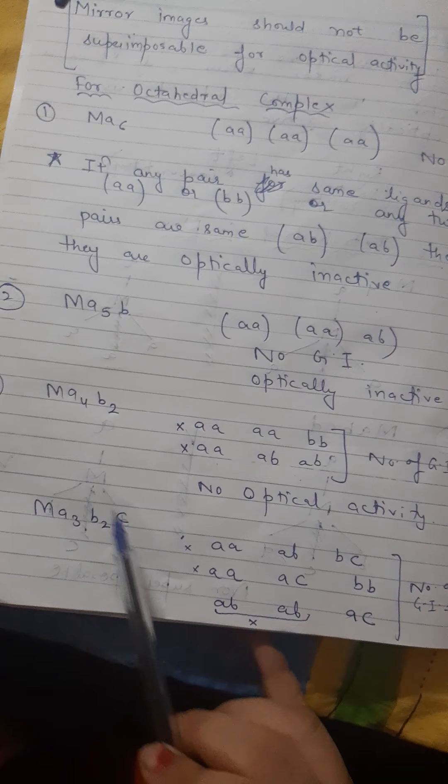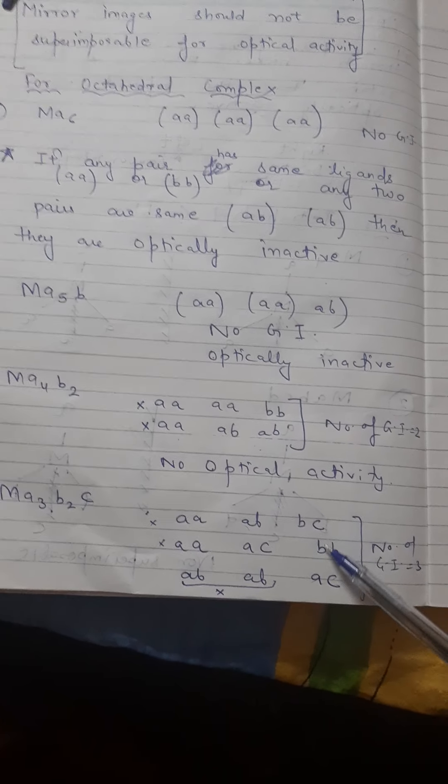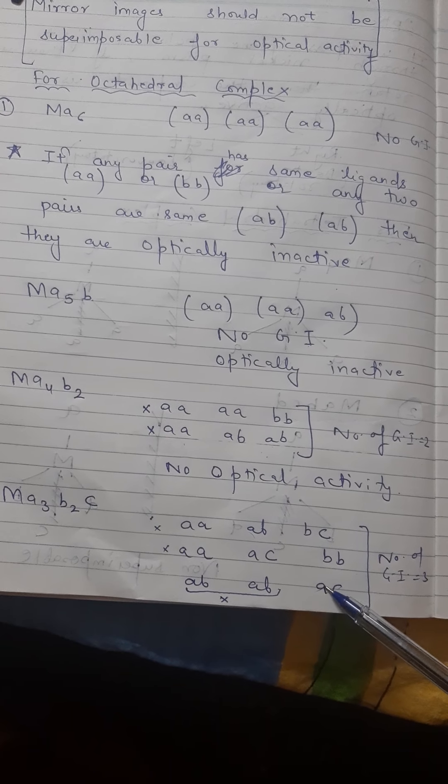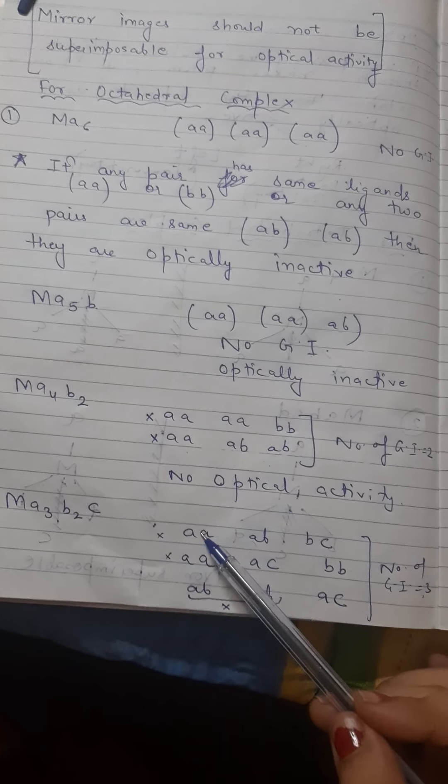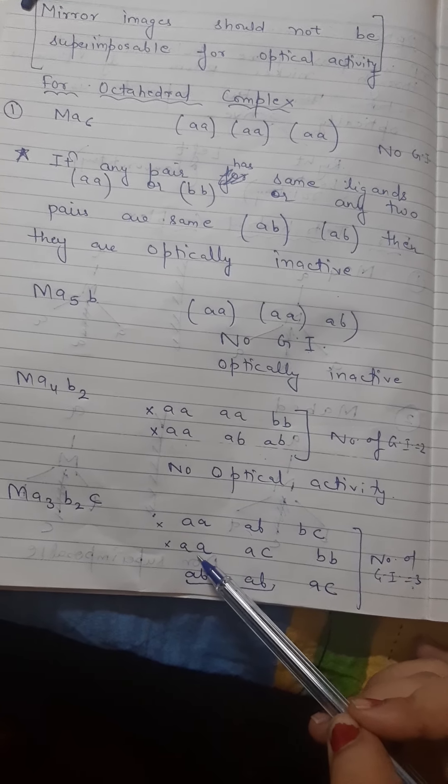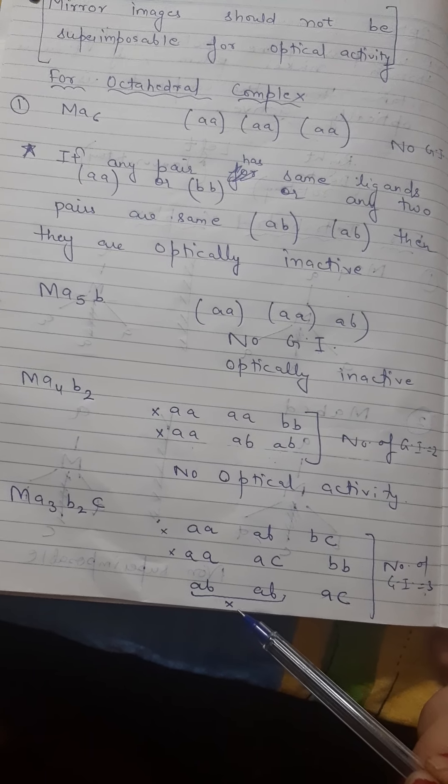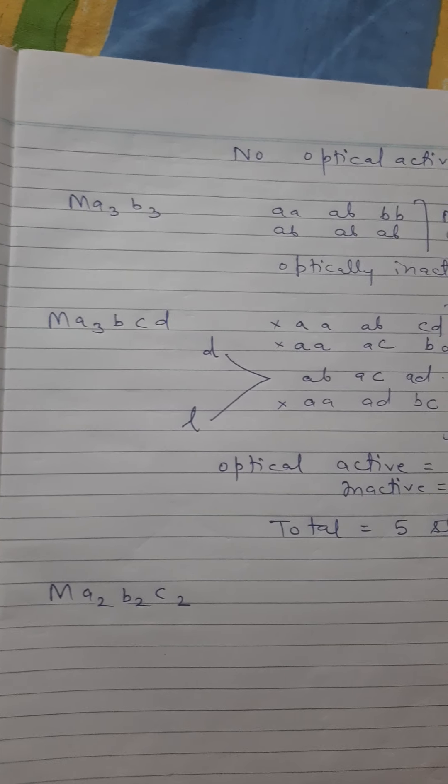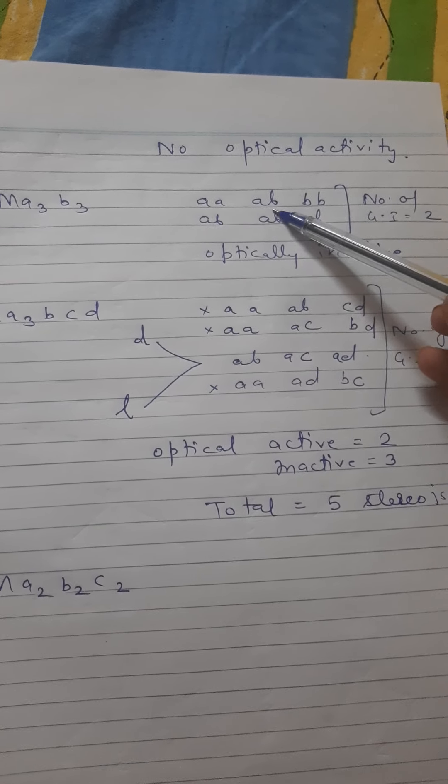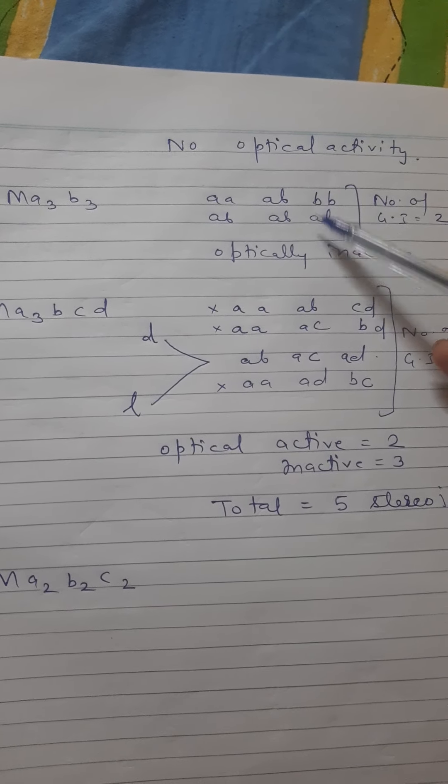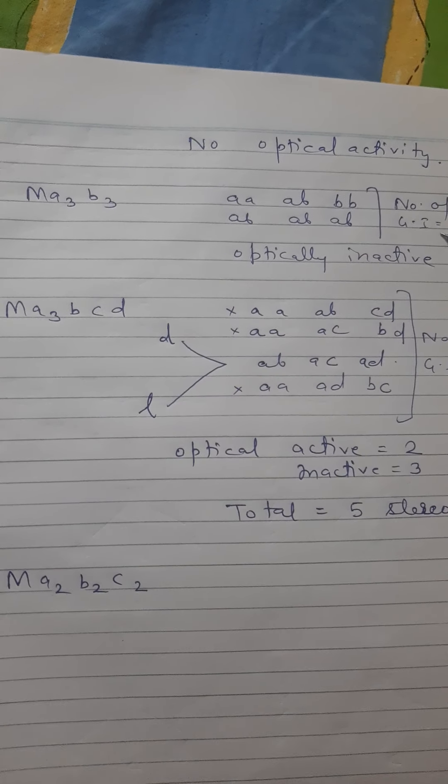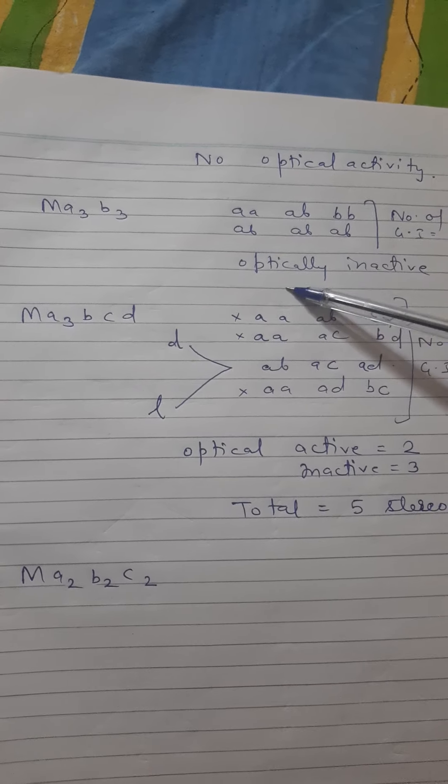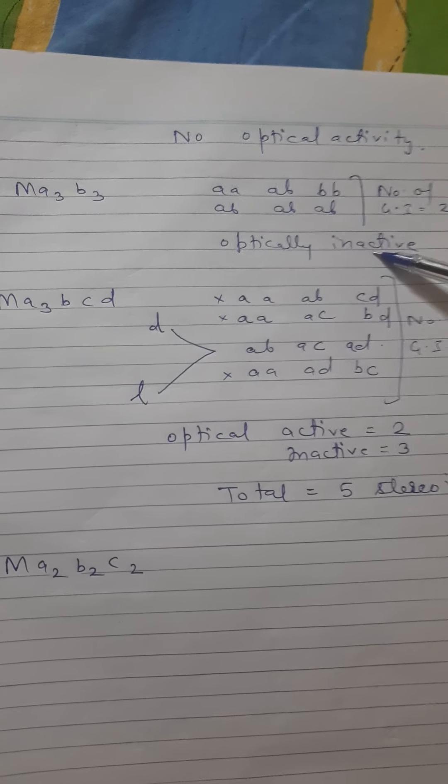MA3B2C - if this is the complex, you can see the geometrical isomers AAA. You can see two combinations are possible. Number of geometrical isomers is 2, but the compound is optically inactive.